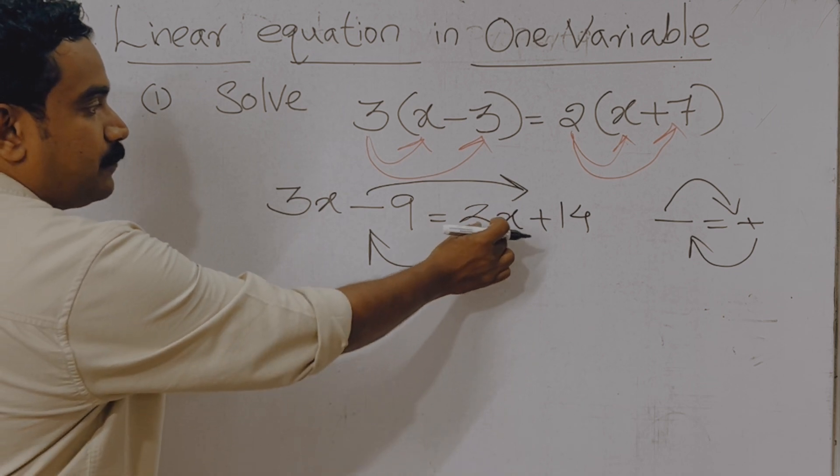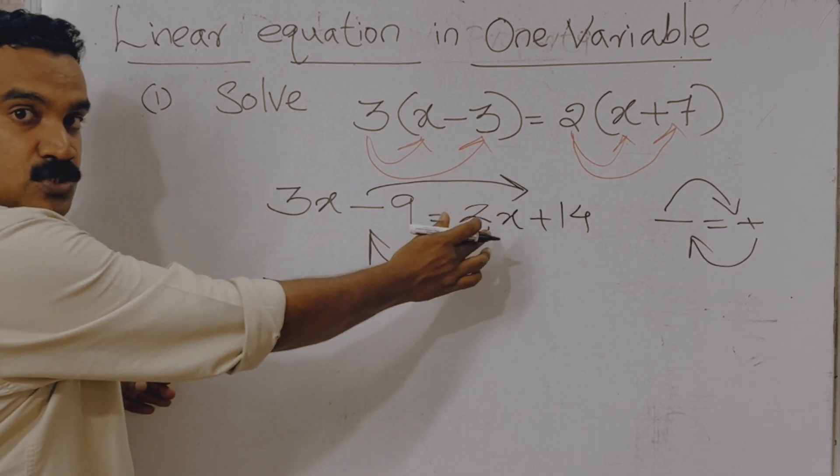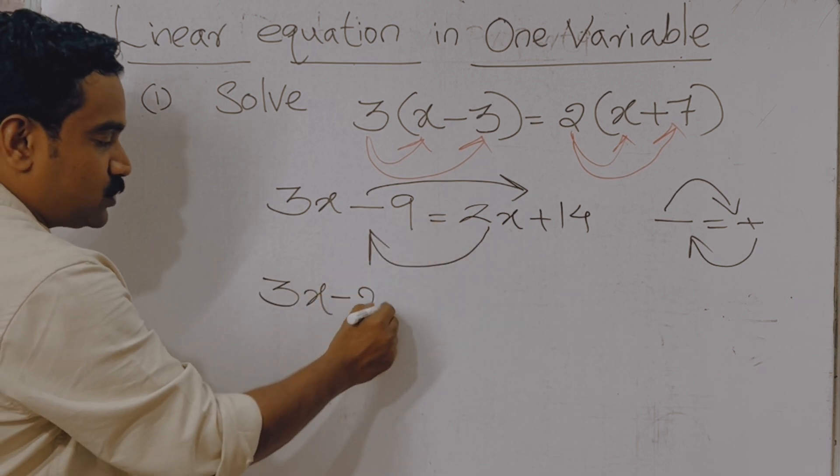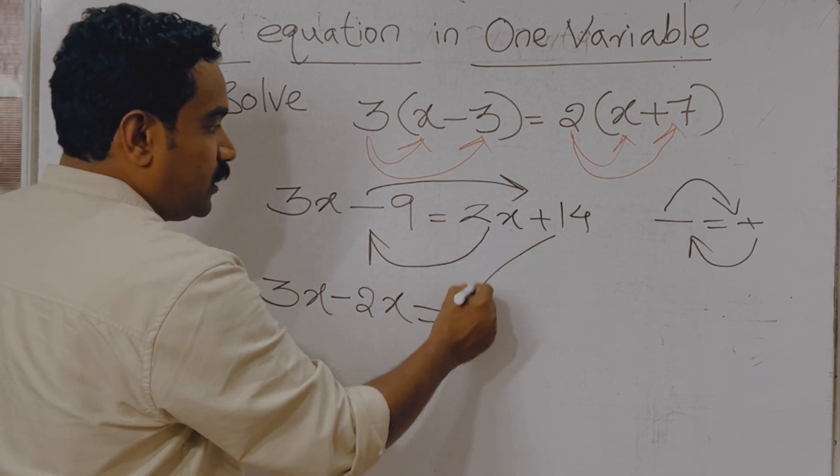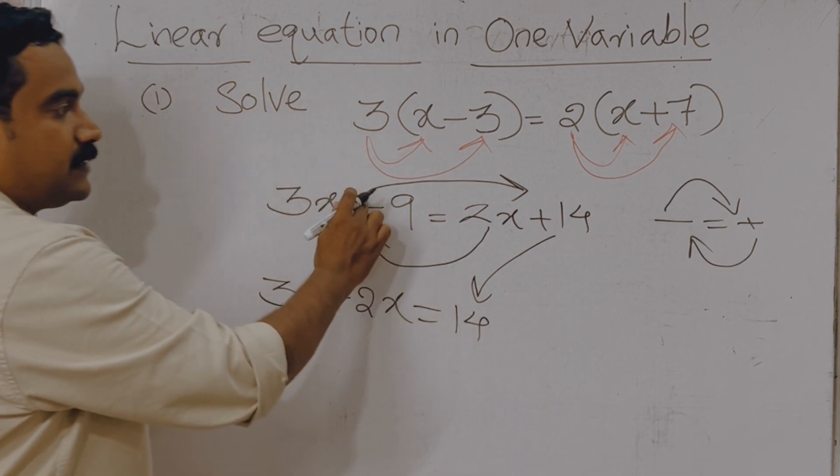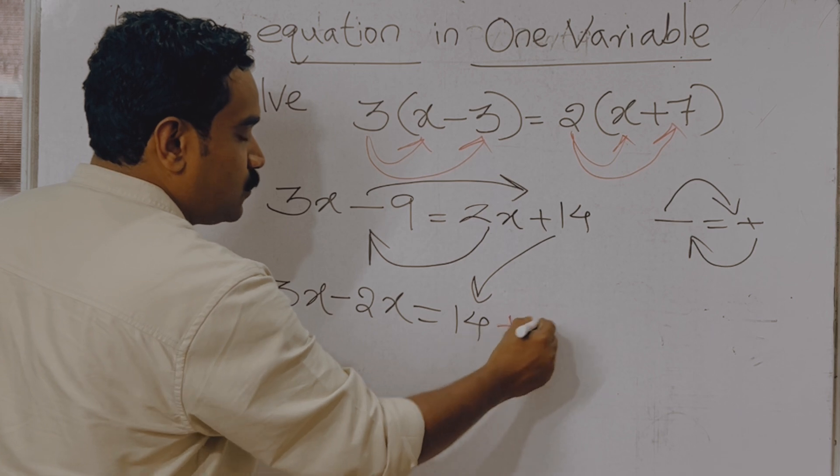So you are taking positive 2x to the left side. Already here 3x, this plus 2x changes as minus 2x. So this is 3x minus 2x equal to, already 14 we have. Now, and we are taking this negative 9 to that side, negative 9 moving to the right side as positive 9.